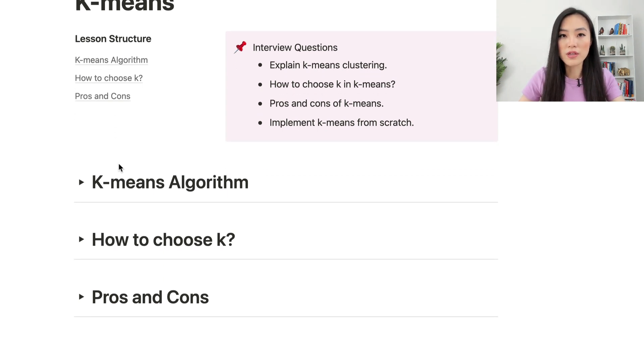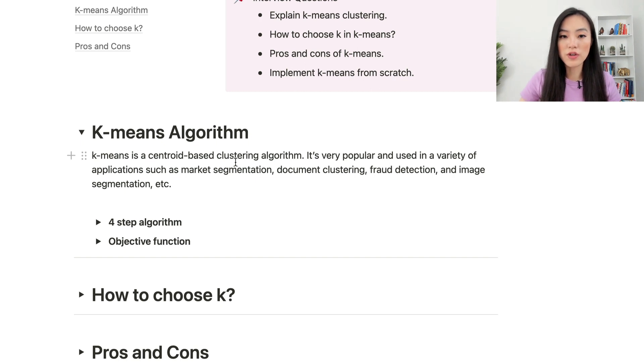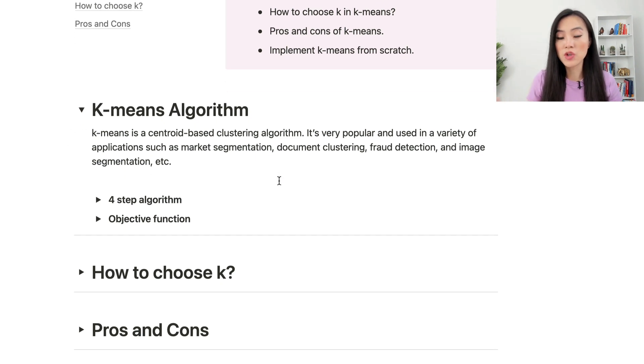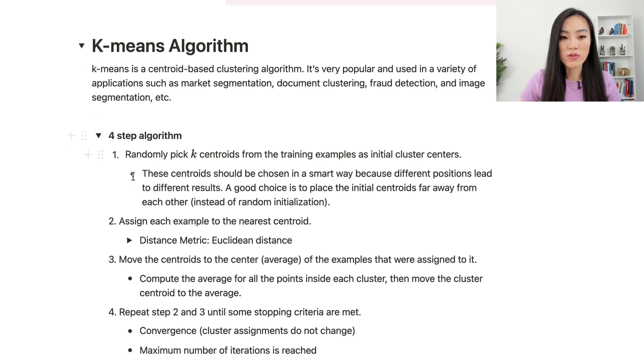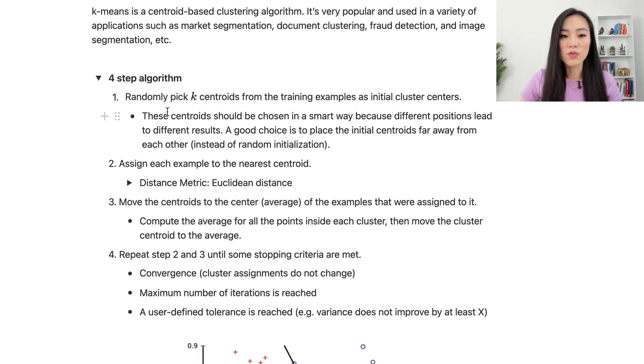Let's start with understanding the algorithm. K-means is a centroid-based clustering algorithm. As I mentioned earlier, it's very popular and used in a variety of applications such as market segmentation, document clustering, fraud detection, and image segmentation. There are four steps in the algorithm. The first step is that we randomly pick K centroids from the training examples as initial cluster centers.